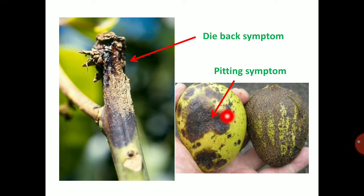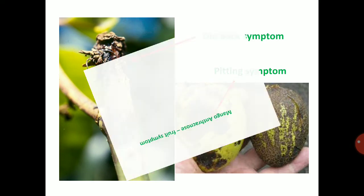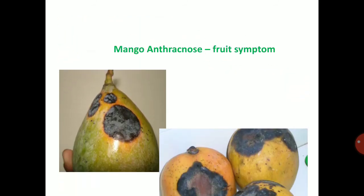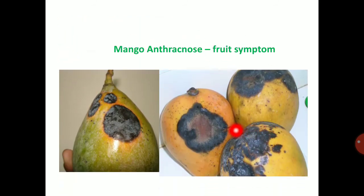Sunken lesions are present on the fruit, because of cell wall degrading enzymes — pectinolytic enzymes and cellulytic enzymes. These degrade the cell wall and produce the pitting symptom. It will produce the pitting symptom. These are all the severe symptoms of mango anthracnose in fruits.